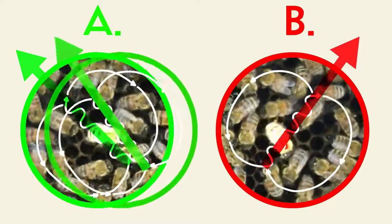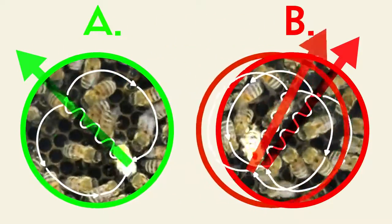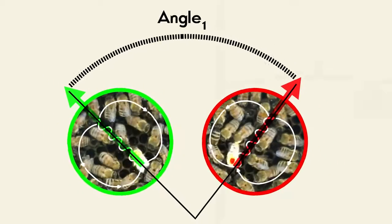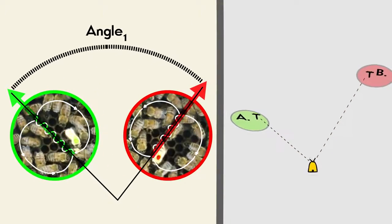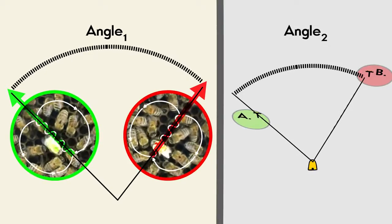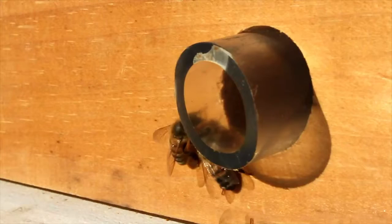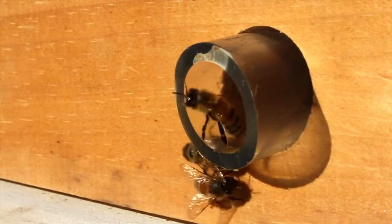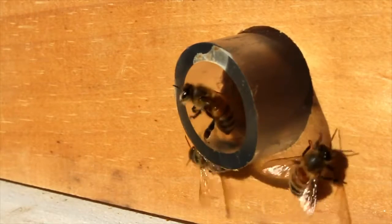Bees returning from one feeder perform a rotated version of the dance done by the other bees. Incredibly, the angle of rotation precisely matches the angle between the feeding stations and the hive. This must be a clue to the mystery of how the bees are able to share information about the location of food.